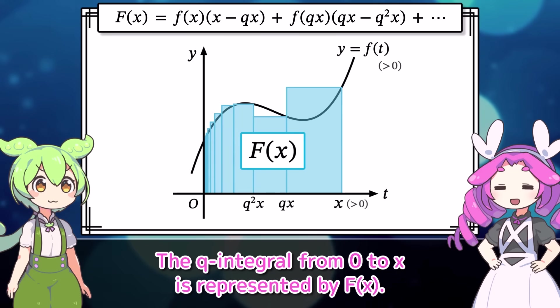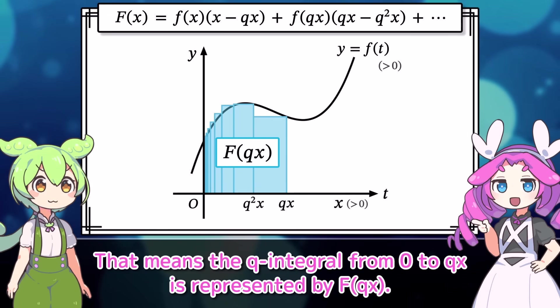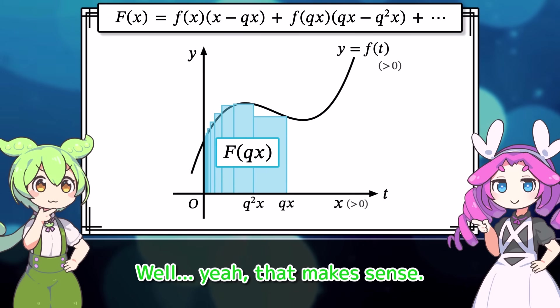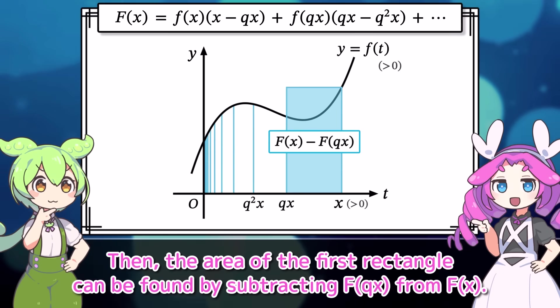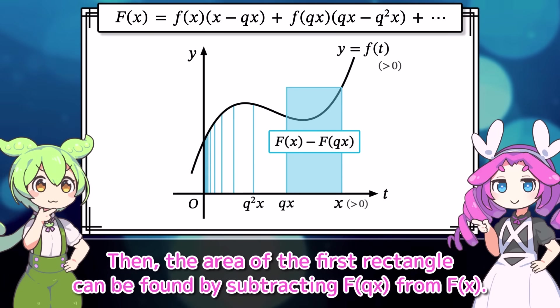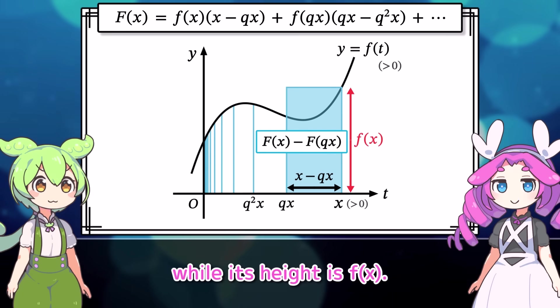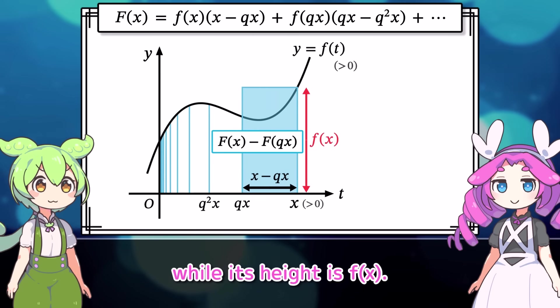Huh? Really? The q integral from 0 to x is represented by capital F of x. That means the q integral from 0 to qx is represented by capital F of qx. Well, yeah, that makes sense. Then, the area of the first rectangle can be found by subtracting capital F of qx from capital F of x. Oh, I get it. And the width of the rectangle is x minus qx, while its height is f of x.